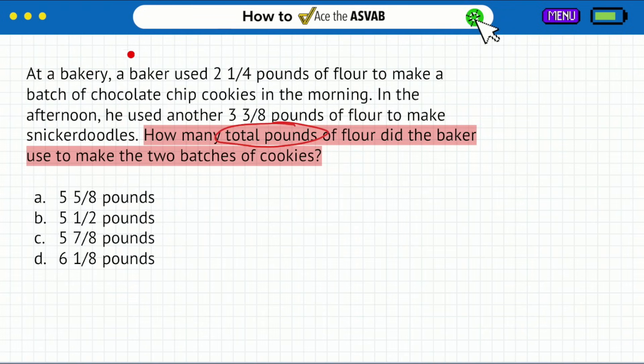So at a bakery, a baker uses two and a quarter pounds of flour to make a batch of chocolate chip cookies in the morning. In the afternoon, he uses this much flour to make snickerdoodles. So it sounds like to me, we have a baker who's using flour for this and then for that. And we're just trying to see how many total pounds we used. I think that's pretty straightforward.